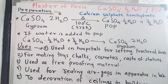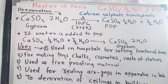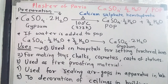The two reactions for POP are exactly opposite to each other — the product of one is the reactant of the other. POP is prepared from a substance called gypsum. The difference between POP and gypsum is the number of water molecules: POP has half a water molecule while gypsum has two. When gypsum (CaSO4·2H2O) is heated with controlled heating up to 100°C (373 K), we get POP.